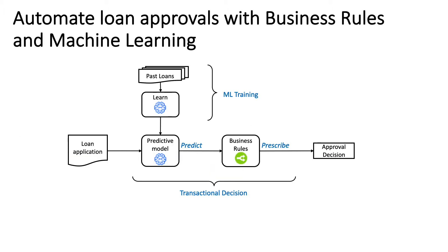For an automated loan approval decision, historical data allows us to train a predictive model to provide insight into the risk of default, and combining this with business rules for policy enforcement ensures a more complete overall decision.